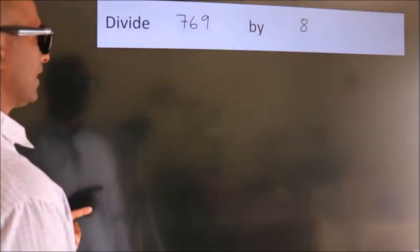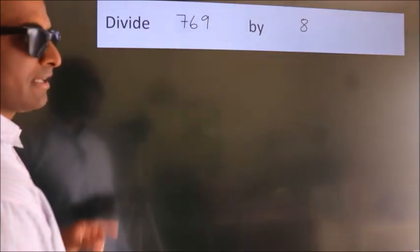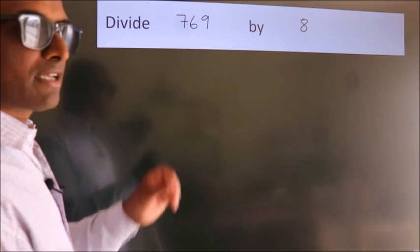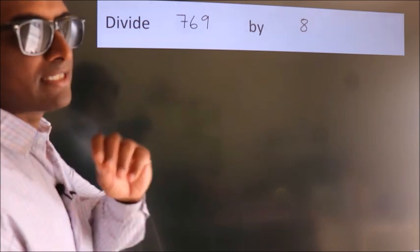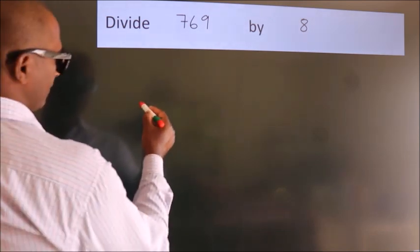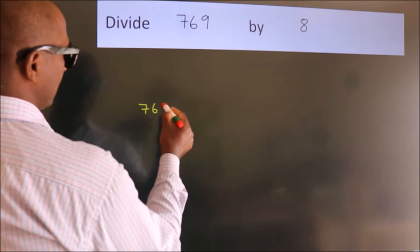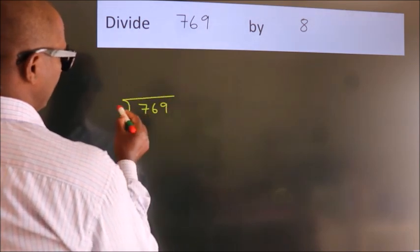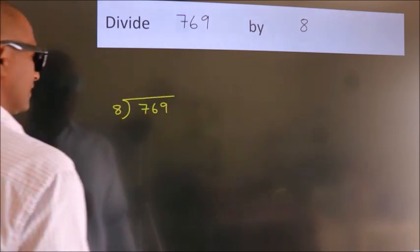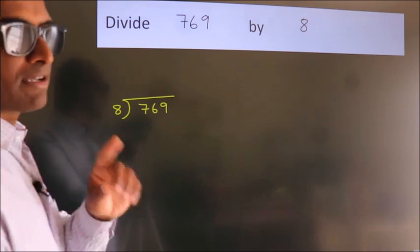Divide 769 by 8. To do this division, we should frame it in this way. 769 here, 8 here. This is your step 1.